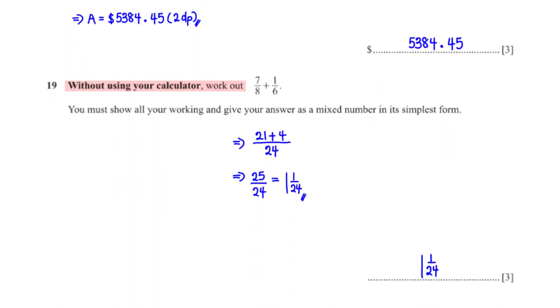Without using your calculator, work out 7 over 8 plus 1 over 6. You must show all your working and give your answer as a mixed number in its simplest form. The LCM of 8 and 6 is 24. For 7 over 8, since we multiply the denominator, which is 8, by 3 to get the LCM, we also need to multiply the numerator by 3. So 7 times 3 gives us 21. For 1 over 6, since we multiply the denominator, which is 6, by 4 to get the LCM, we also need to multiply the numerator by 4. So 1 times 4 gives us 4. So now 21 plus 4 gives us 25. 25 over 24 is an improper fraction. So we need to convert it into a mixed fraction. 24 goes into 25 one time with a remainder of 1, which we divide by 24. So we have 1, 1 over 24.